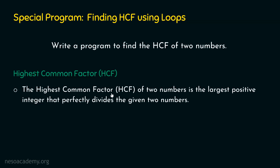What about common factor of two numbers? We may have two numbers and we want to find the common factor. There can be many common factors. A common factor is a factor which is common in both numbers. For example, 3 is the common factor of 12 and 18 because 3 divides both 12 and 18.